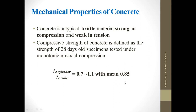We must note that the strength of concrete is a random variable, and therefore correlations obtained from a limited number of tests can be very misleading. The multiplier of 0.85 is obtained from mean values of tests, and individual samples can deviate from this by as much as plus or minus 30%. We have a lot to cover in this section, so we will continue the rest in Part 2.